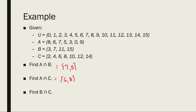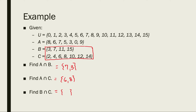Finally, we intersect B and C. Looking at these two sets, they do not appear to have any elements in common. So the intersection is simply the empty set, since there are no elements in common.